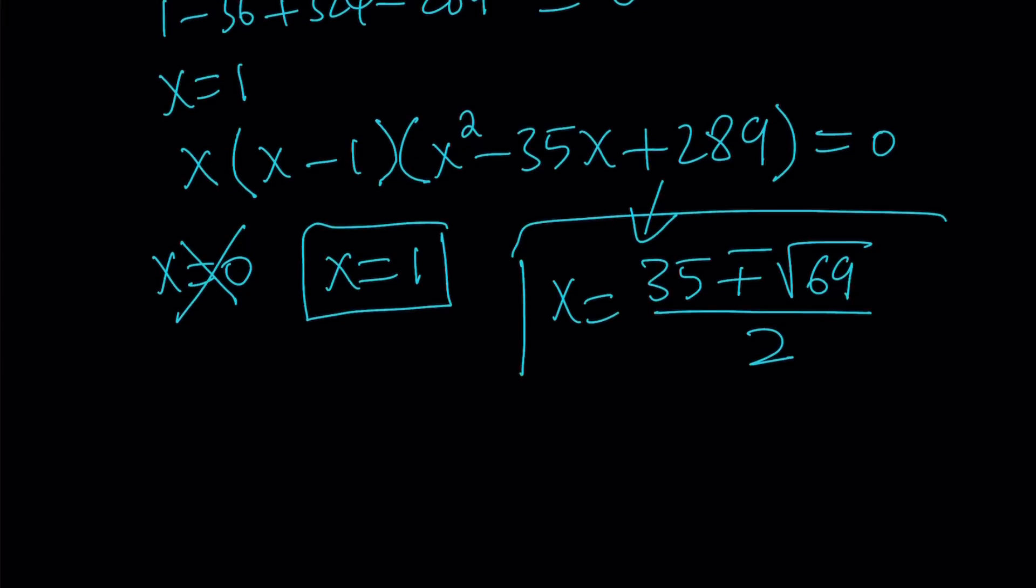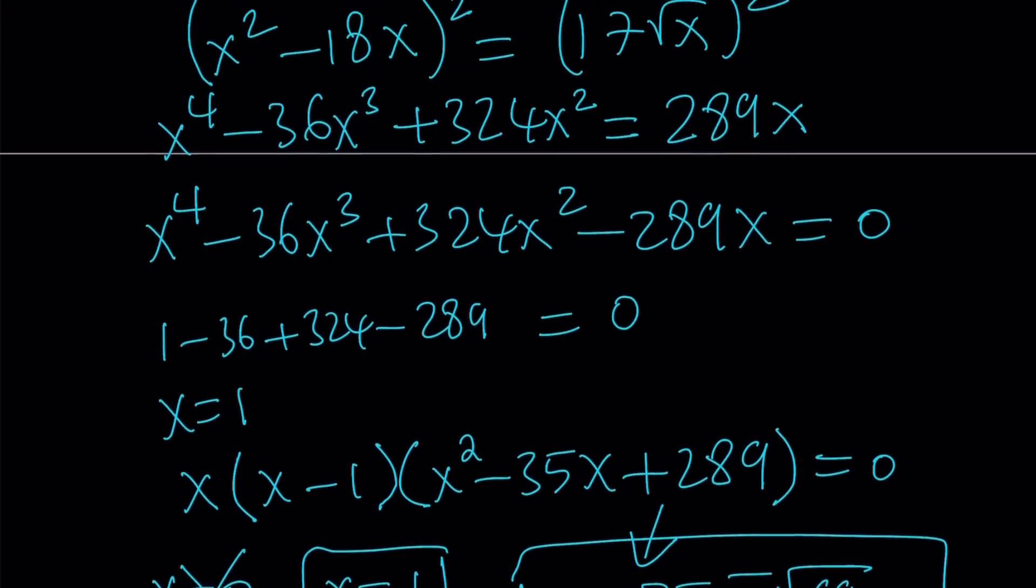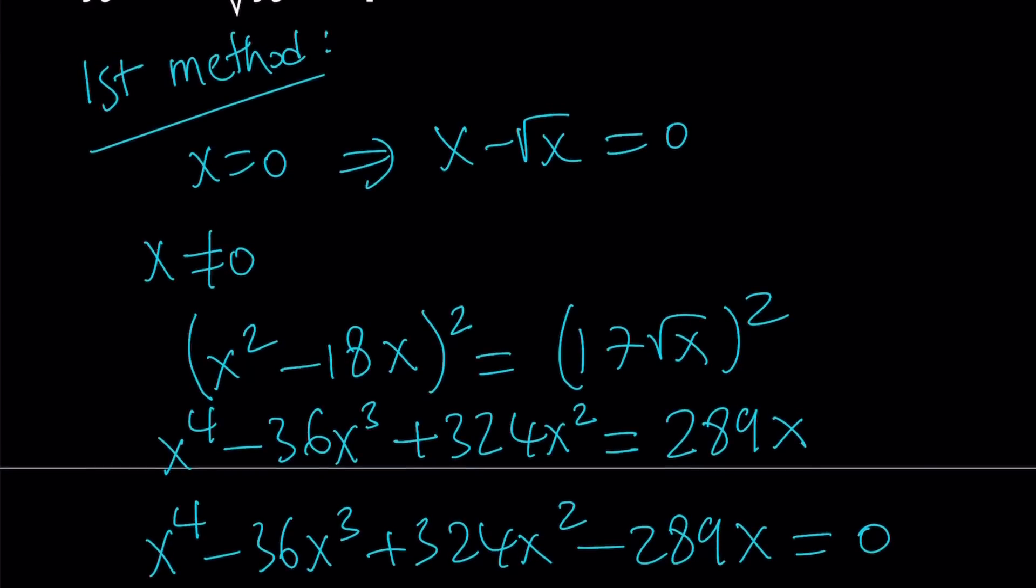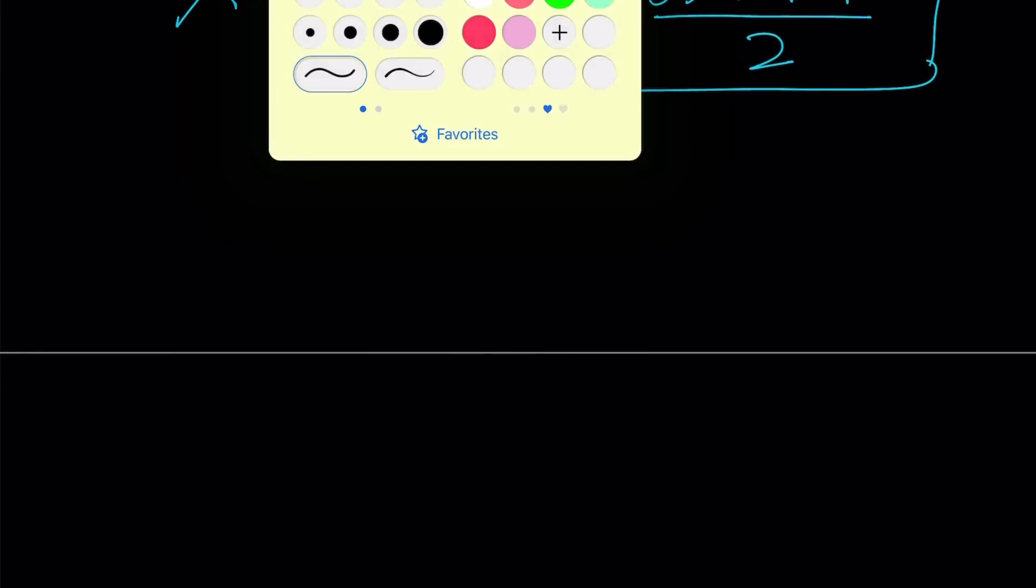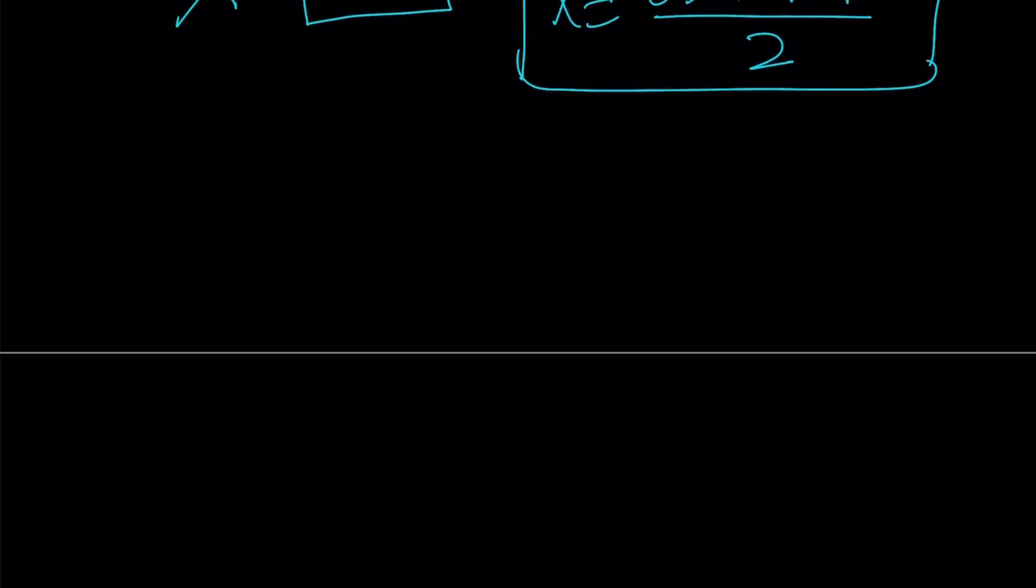So we kind of get like three candidates, and we're going to check all of them. Because we had a radical equation, we have to make sure x is positive and it satisfies the original equation because we might have introduced extraneous solutions because we squared both sides.